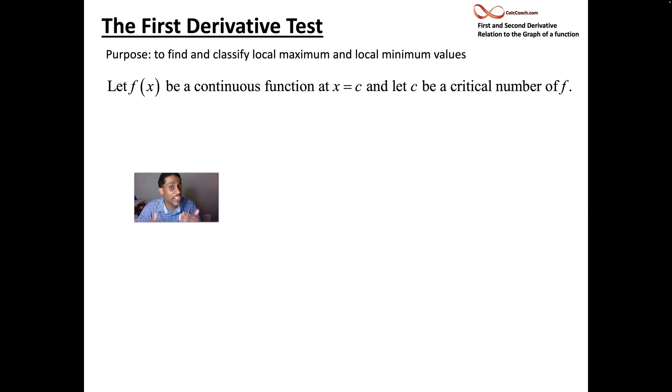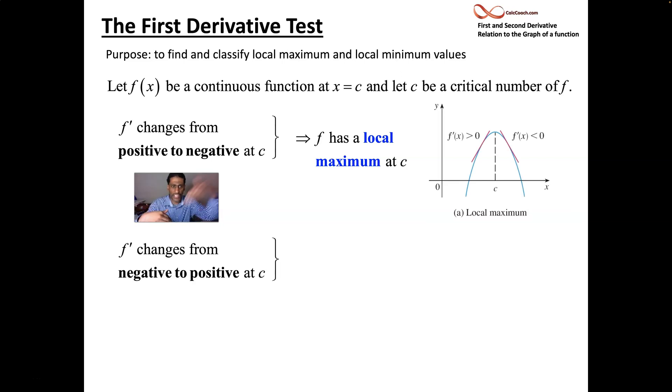How can you guarantee a peak or a valley? It's about how your function changes from increasing to decreasing or vice versa. And so if your derivative changes from positive to negative, that means your function changes from increasing to decreasing, and it's those places where you have a local maximum. And flipping that around, if your function changes from decreasing to increasing, then you'll see at those places you'll have a local minimum.